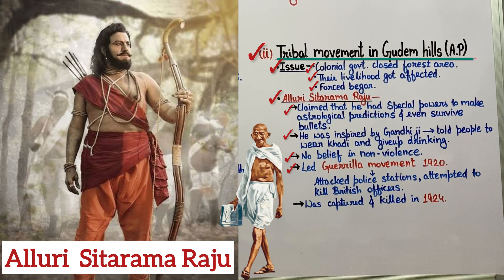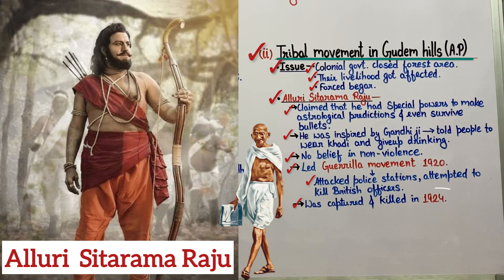In this guerrilla movement, people attacked police stations. British officers tried to kill them, but Alluri Sitaram Raju used to fight them back. Eventually in 1924 he was captured and killed. This concludes the reading about the Tribal Movement in the Gudam Hills of Andhra Pradesh.